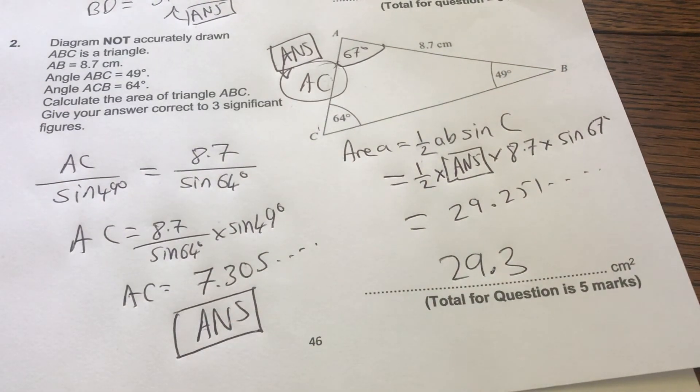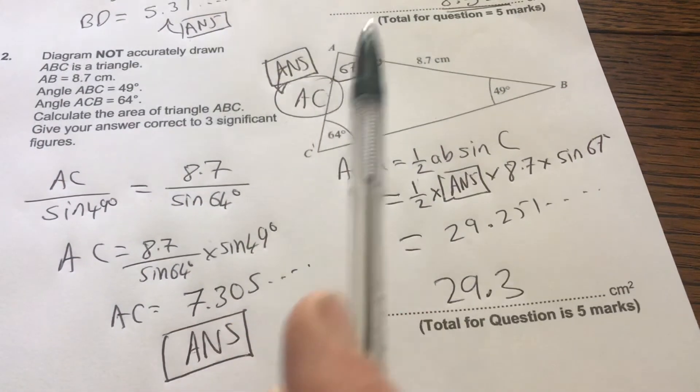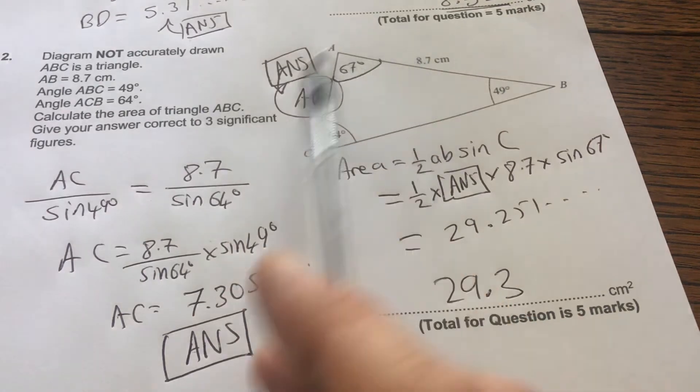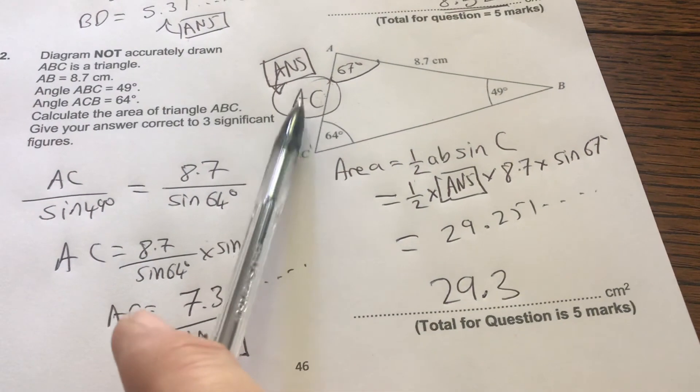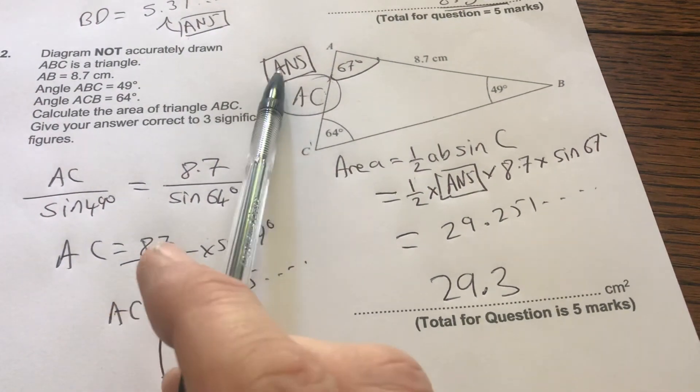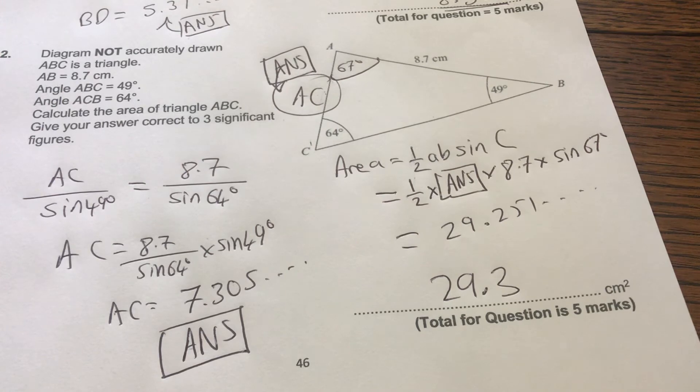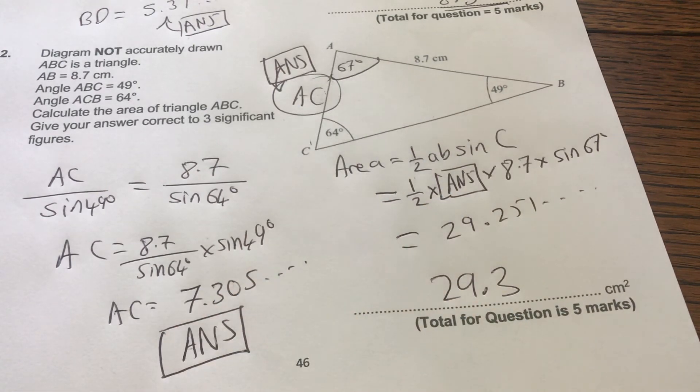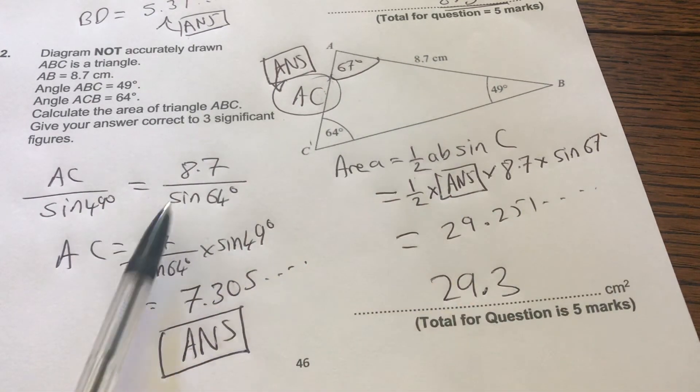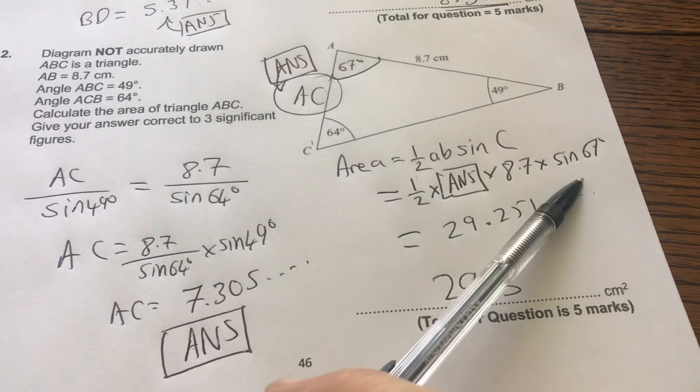Let's just recap what we've done. We've got to work out the area, but we don't have the angle sandwiched by two known sides. We use sine rule to get this side, and I'll call that ANS because that's what I'm going to use on my calculator, the ANSWER button. I know that angle because angles in the triangle add up to 180, and then we can just stick that in our calculator.